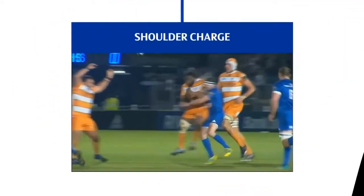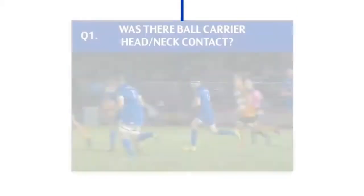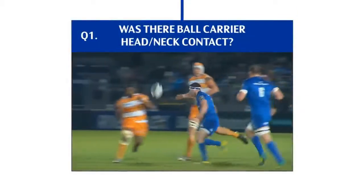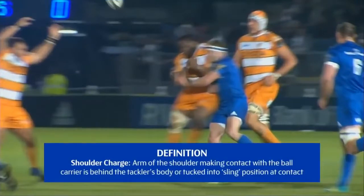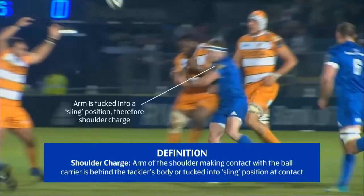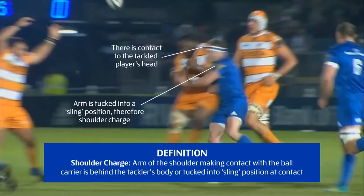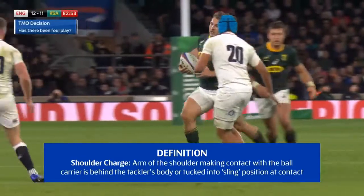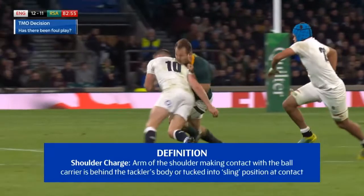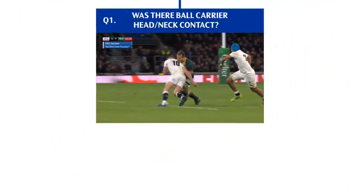Let's look at the example of a shoulder charge. If dealing with a shoulder charge, the first question match officials must ask is whether there is any contact between the tackler's shoulder and the head or neck of the tackled player. In this example, there is clear head contact, recognised as per the definition for head contact. Here is an example of a shoulder charge where there is no contact to the head or neck of the ball carrier.